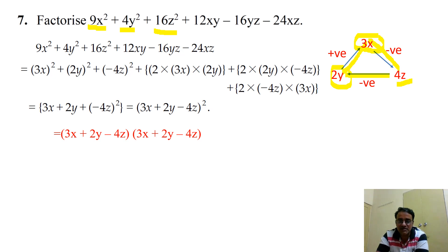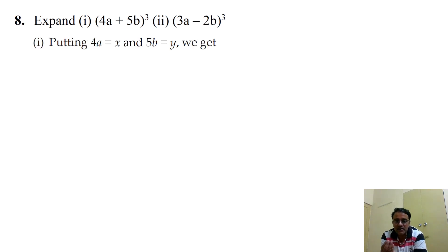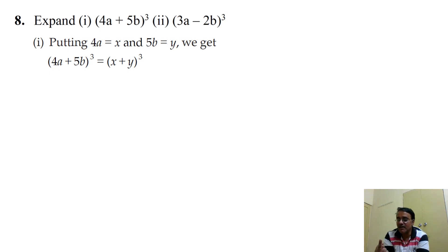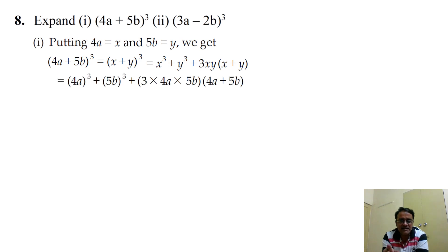Question 8, first part: expand (4a + 5b)³. We let x = 4a and y = 5b, giving the form (x + y)³. Using the formula x³ + y³ + 3xy(x + y), we replace x by 4a and y by 5b and simplify.